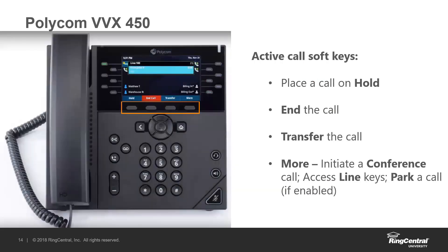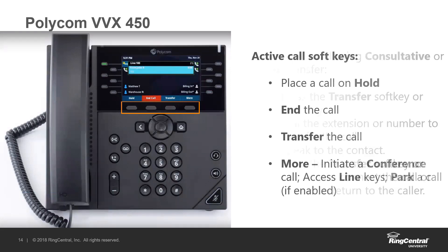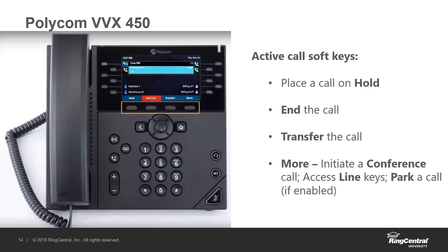These are the soft keys during an active call. The one on the left says 'hold,' then 'end call,' then 'transfer,' then 'more.' Under 'more,' we have conference and park options as well. For hold and transfer, you can either press the soft keys or the hard button programmed on the phone. To end a call, you can press that end call button, hang up the handset, or if you're on speakerphone or headset, pressing that respective button will hang up the call.